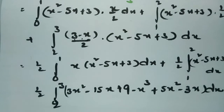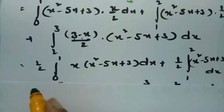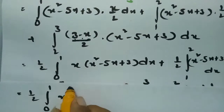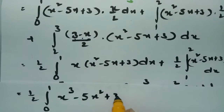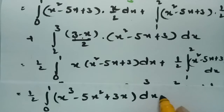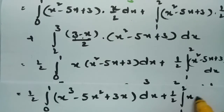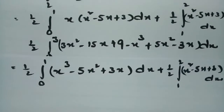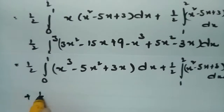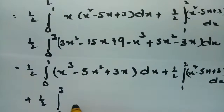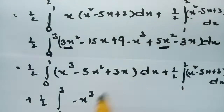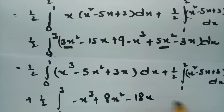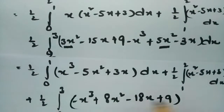For the first integral, multiplying x into (x² - 5x + 3) gives x³ - 5x² + 3x. So we now have: (1/2)·∫₀¹(x³ - 5x² + 3x)dx + (1/2)·∫₁²(x² - 5x + 3)dx + (1/2)·∫₂³(-x³ + 8x² - 18x + 9)dx.